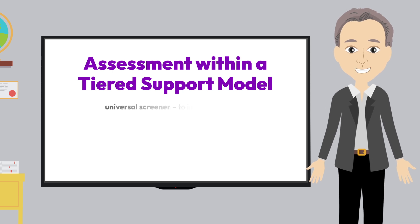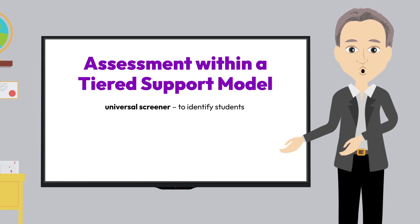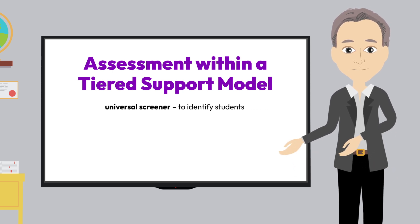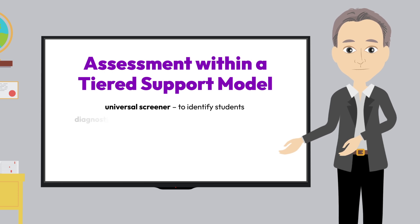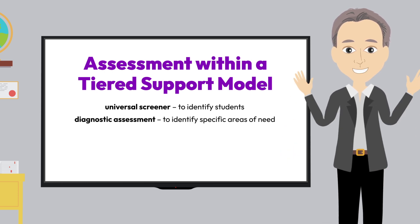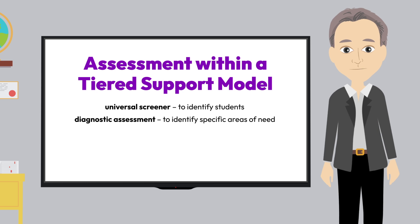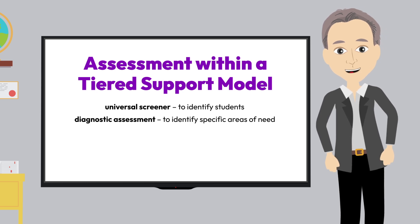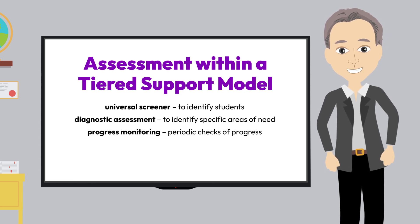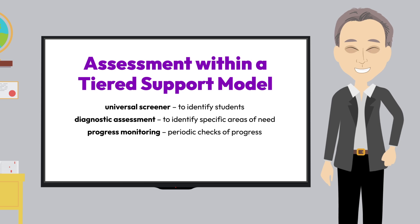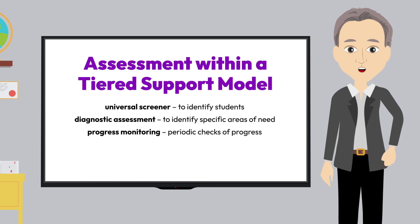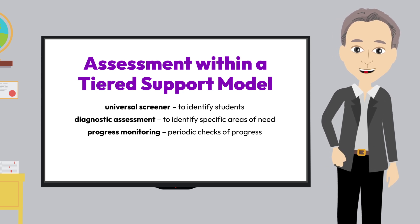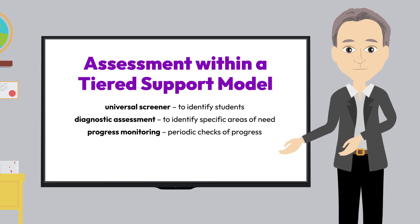A universal screener is used usually at the beginning of the school year to identify students who might need extra support. Diagnostic assessment generally follows screening and is used to zone in on specific knowledge and skill areas of need. Progress monitoring tools are then used for regular periodic checks of progress throughout the intervention to be sure the right skills and knowledge are being addressed for each child.